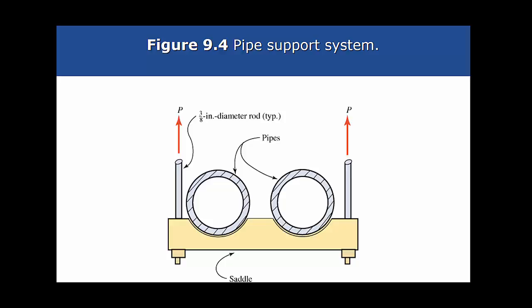We know what the allowable stress is. That was given as 24,000 pounds per square inch. We know what the area is now, so we should be able to figure out what the force is that that can withstand. That 3/8 diameter rod can withstand 2,650 pounds of force.